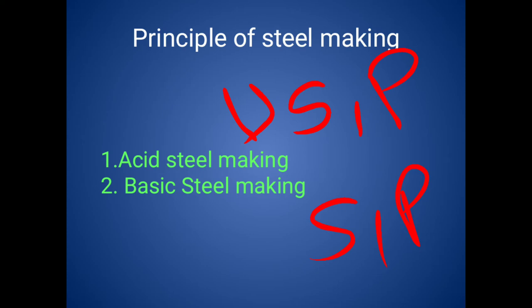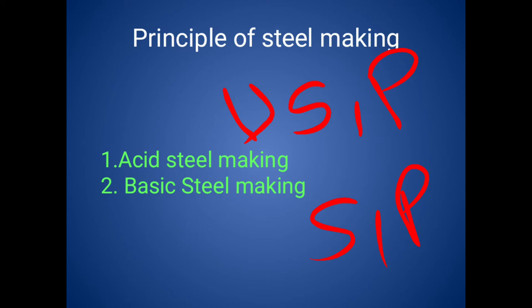In the basic steel making process, the furnace lining is basic refractory material. In both acid and basic steel manufacturing methods, there are three stages. The first stage involves eliminating the impurities. The second stage is correcting the carbon content — if carbon is high we reduce it, if carbon is low we increase it as per our requirement. The third stage is adding alloying elements to increase properties like strength or hardness.